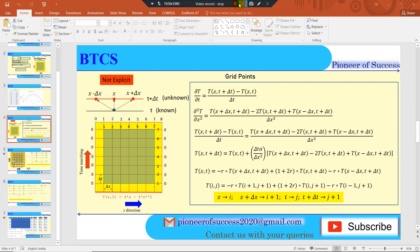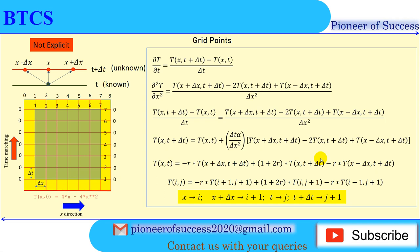Hello friends, welcome to Pioneer of Success. We are conducting a training course on the unsteady heat transfer equation. We already started discussion about the BTCS process — that is the Backward Time Central Space scheme — which is a discretization scheme to solve the unsteady heat transfer equation. Let me quickly recap what we discussed in the last video. I will put the link in the description box so you can go through it before coding along.